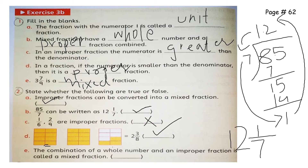The last true/false: the combination of a whole number and an improper fraction is called a mixed fraction. This is false, because a mixed fraction must contain a proper fraction, not an improper fraction.